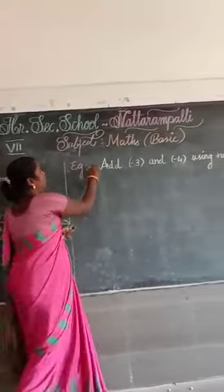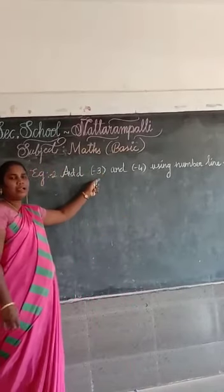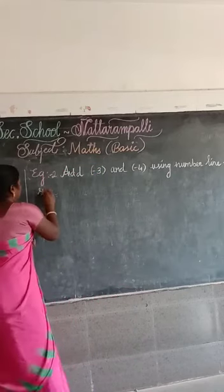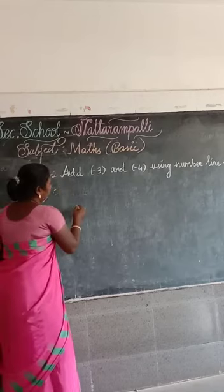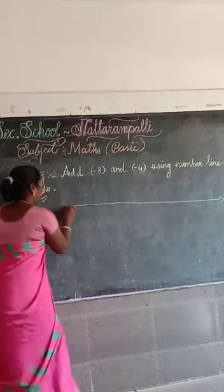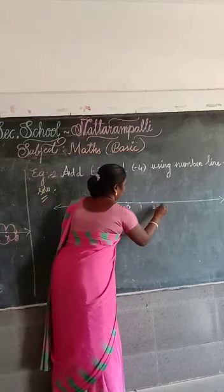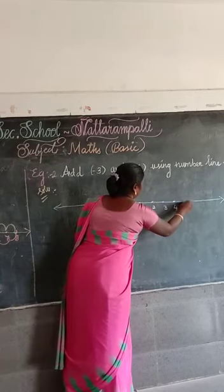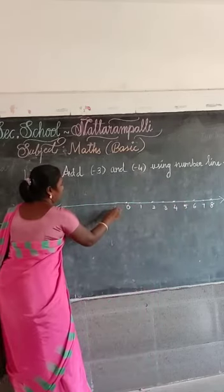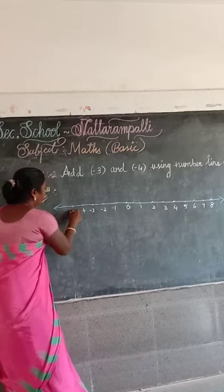Next, example 2: add minus 3 and minus 4 using the number line. Both numbers are negative. First, draw the number line and use the scale. Mark the numbers: negative side 1 through 8, positive side 1 through 8.